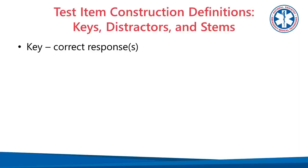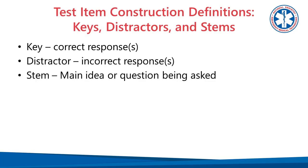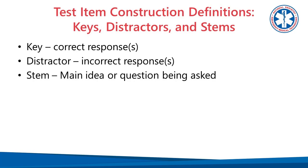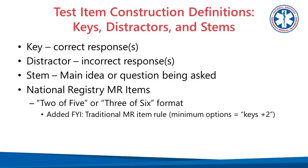Some helpful information for good test item construction is knowing the terminology and the parts of the item. The key is the correct option, the distractor is the incorrect option, and the stem is the general concept or question being asked. For multiple response items, the National Registry uses a 2-of-5 or 3-of-6 format, meaning the candidate is presented with five options and expected to choose two keys, or presented with six options and expected to choose three keys. As an added note, traditionally you want a minimum of your keys plus two additional options — so two keys and two distractors, for example.